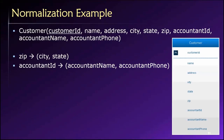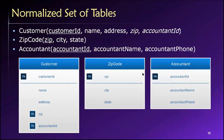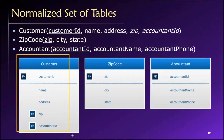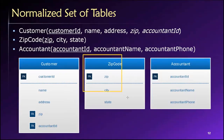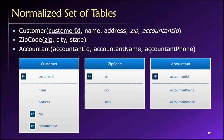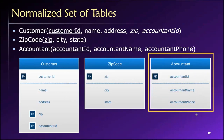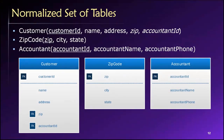To normalize it, we have to break this single table design apart into three tables. We now have customer information in a customer table, a zip code table where all information relates to a zip code, and an accountant table where all information relates to an accountant. This is a fully normalized solution that would be generally impervious to the types of modification anomalies described earlier.